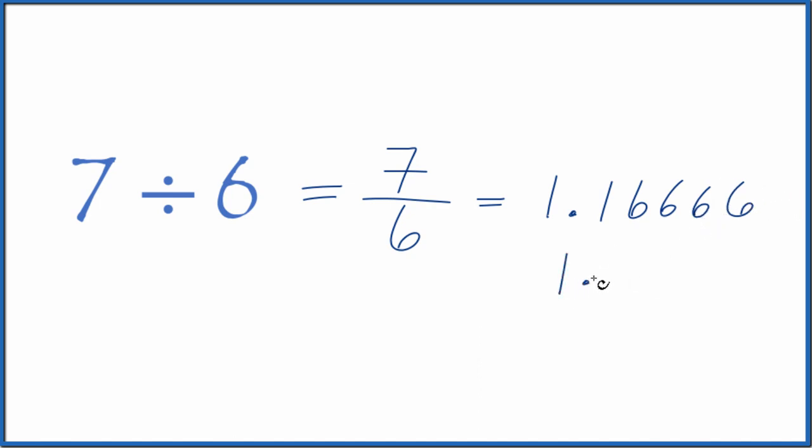So we could round this. We could call this 1.17. That would be okay, but this is rounded. We could also take these 6's here, get rid of them, and then put a line over the 6 to show it repeats. This would be more accurate than the rounded number. Just need to know what your teacher wants.